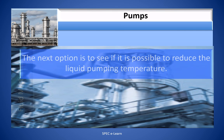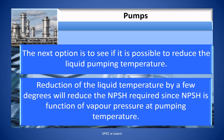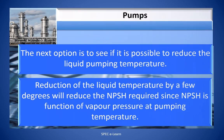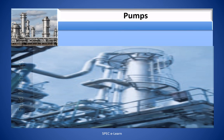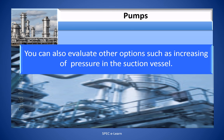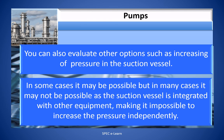The next option is to see if it is possible to reduce the liquid pumping temperature. Reduction of the liquid temperature by a few degrees will reduce the NPSH required, since NPSH is a function of vapor pressure at pumping temperature. You can also evaluate other options such as increasing pressure in the suction vessel. In some cases it may be possible, but in many cases it may not be possible, as the suction vessel is integrated with other equipment making it impossible to increase the pressure independently.